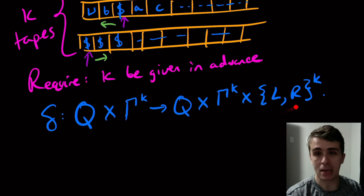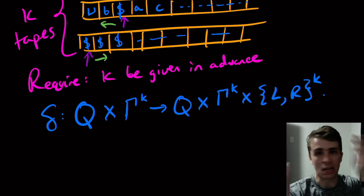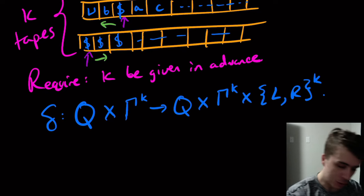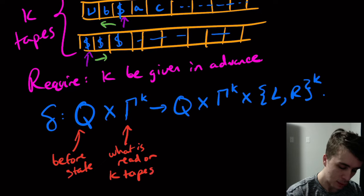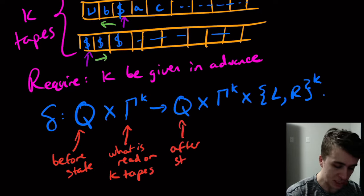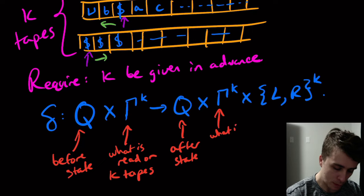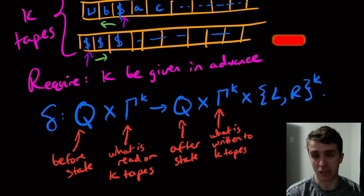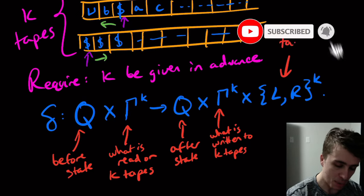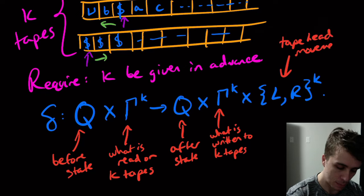Each of the tape heads can move left or right independently, so it's {L, R} to the K power — meaning any combination of lefts and rights across all K heads. To summarize: the transition function takes the current state and K tape symbols (gamma^K) as input, and outputs a new state, K symbols to write (gamma^K), and K head movements ({L,R}^K). This is why K must be fixed in advance — so the transition function is well-defined.